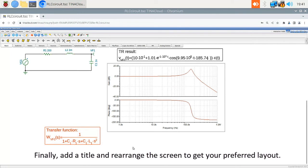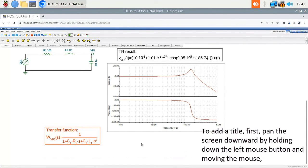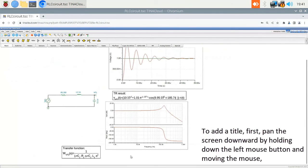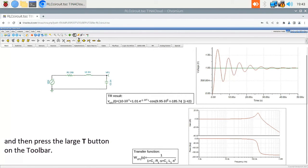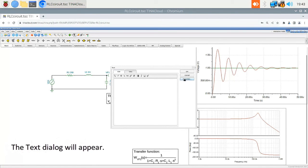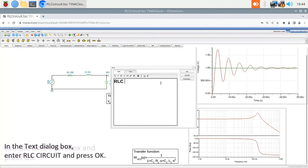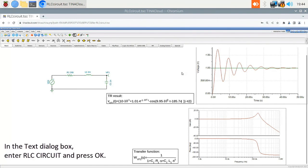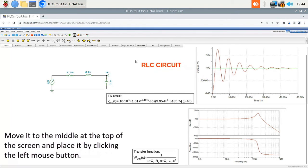Finally, add a title and rearrange the screen to get your preferred layout. The final layout will be automatically saved in the RLCCircuit.tsc file. To add a title, first pan the screen downward by holding down the left mouse button and moving the mouse, and then press the large T button on the toolbar. The text dialog will appear. Press the Properties button, select 24 or a similar font size, tick the Bold checkbox, and press OK. In the text dialog box, enter RLCCircuit and press OK. The RLCCircuit text will appear attached to your cursor. Move it to the middle at the top of the screen and place it by clicking the left mouse button.